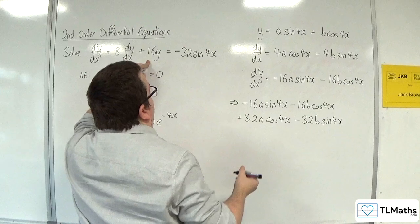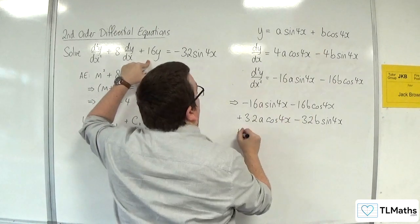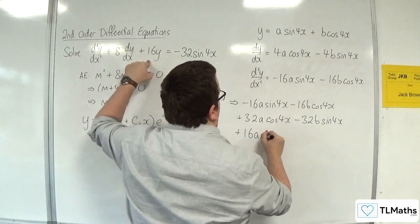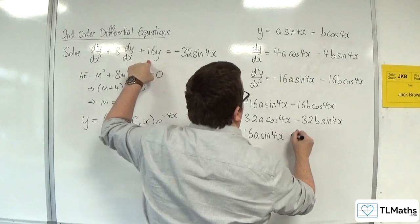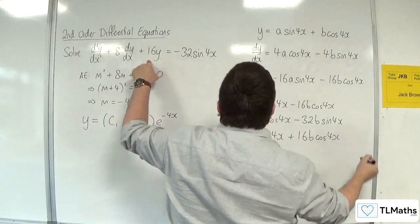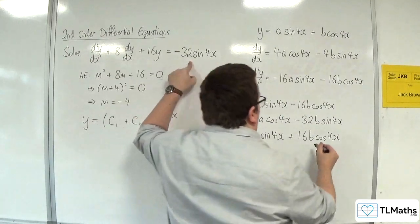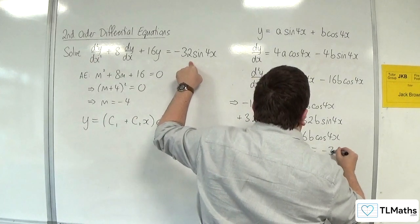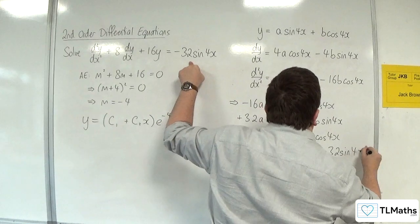Then we've got 16 lots of y, so plus 16a sin(4x) + 16b cos(4x). And that's all going to be equal to -32 sin(4x).